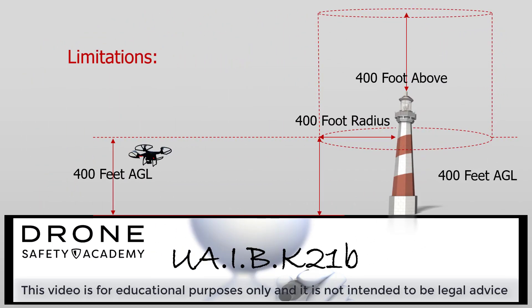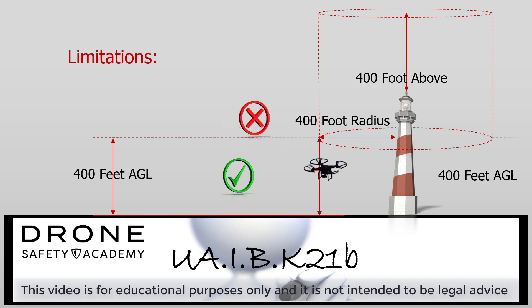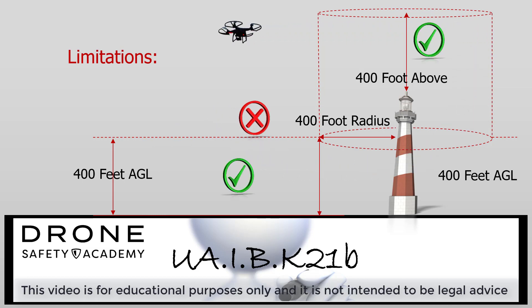This example is fairly straightforward. SUAS operational limitations are from the surface up to 400 feet AGL, and 400 feet above a structure within a 400 foot radius.